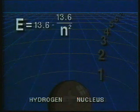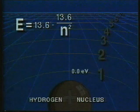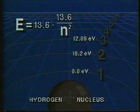Using this formula, Bohr predicted the energy levels for each of the allowable orbits in the hydrogen atom.